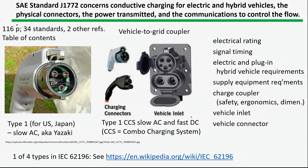For electric vehicle charging, we have the same situation of many different kinds of standards. One which covers some of the issues is SAE J1772, which is for both electric and hybrid vehicles. It talks about the connectors themselves, how much power is transmitted, and the communications. Remember that you're not only charging the vehicle, but the vehicle and the charging device need to talk to each other — to say, for example, when power should be shut off or how power should be provided to the vehicle.